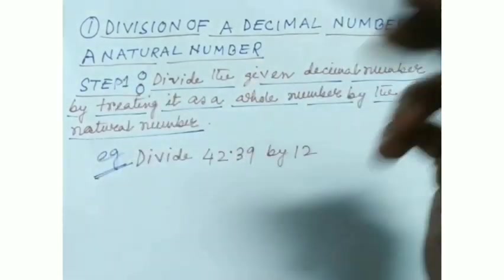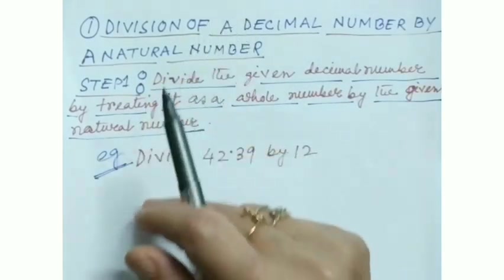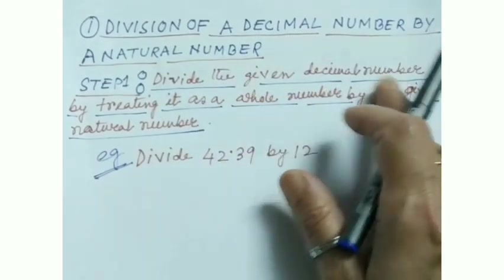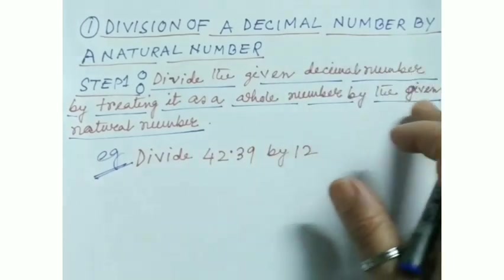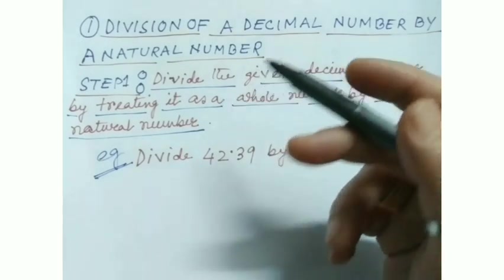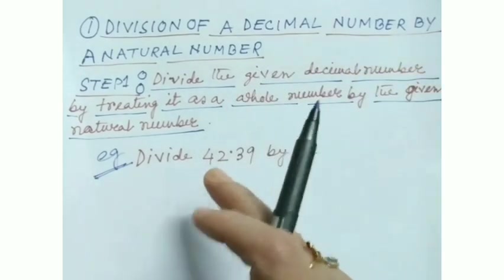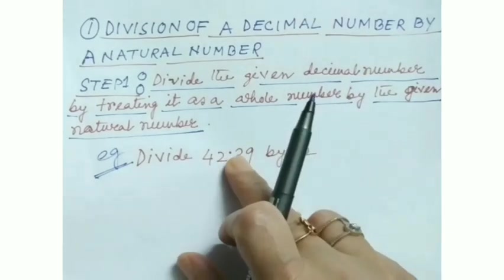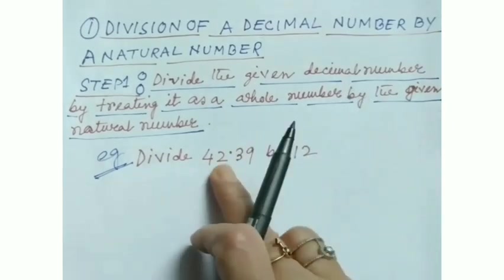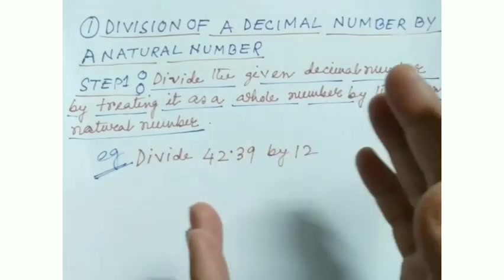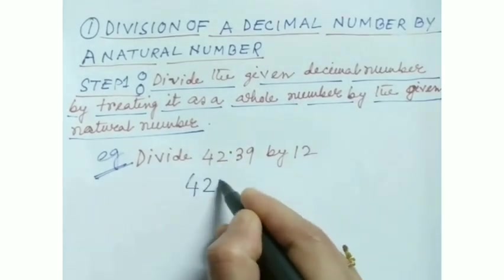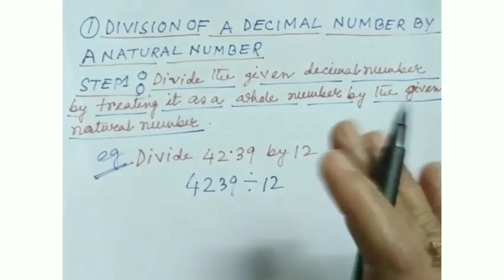Here are the steps. Step number one: Divide the given decimal number by treating it as a whole number by the given natural number. First step is simple - just like multiplication, we ignore the decimal point. We'll think that this dividend part is just like a normal whole number, ignoring this point, and divide it like 423.9 divided by 12.